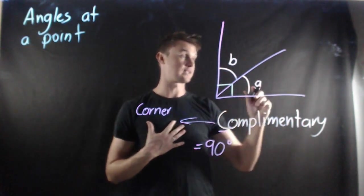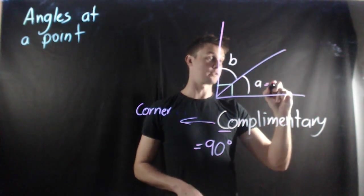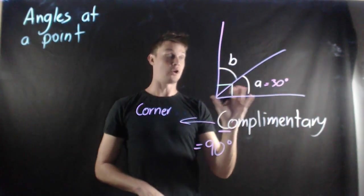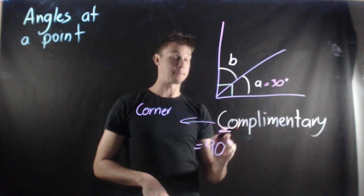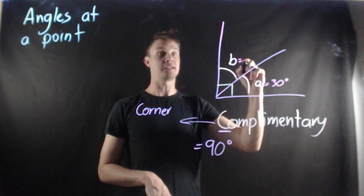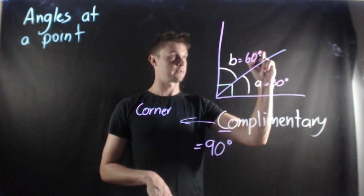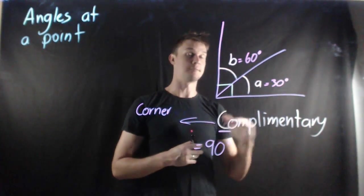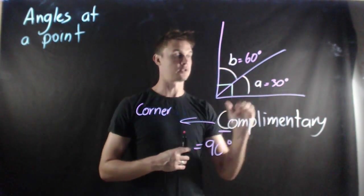So for example let's just say that A in this case was 30 degrees. Because it's a complementary angle, I know that 30 is going to add up to 90. I know that B will equal 60. So it's working out what is left and how much we need to know to make up the complementary angle which makes 90 degrees.